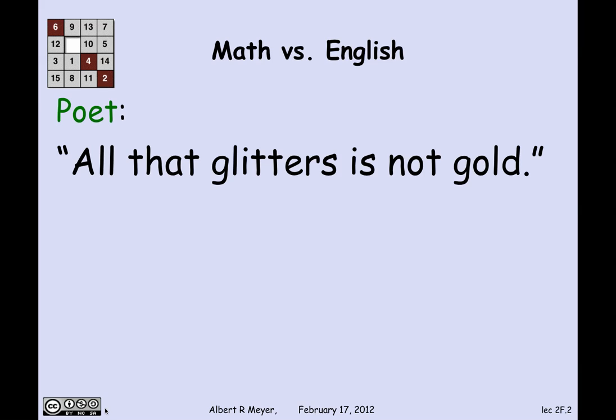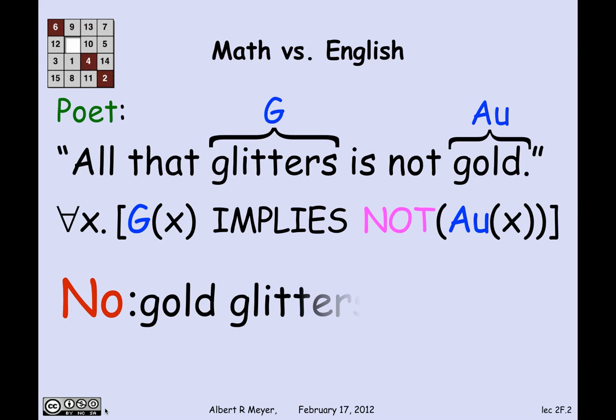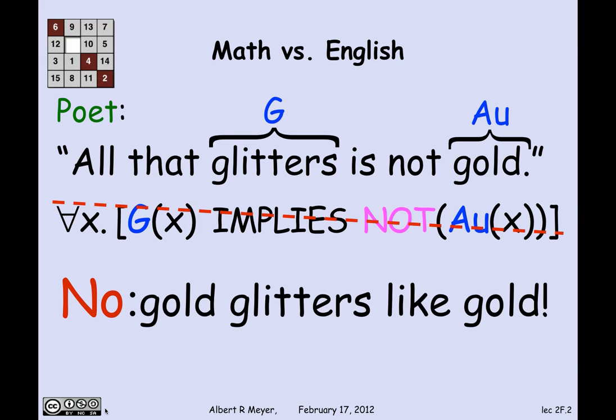A literal translation would be: if we let G be 'glitters' and AU be 'gold,' then translated literally it would say for every x, G(x) implies not AU(x) — if x glitters, then x is not gold. Well, is that a sensible translation? It's clearly false, because gold glitters like gold, and you can't say that gold is not gold. So this is not what's meant — it's not a good translation.